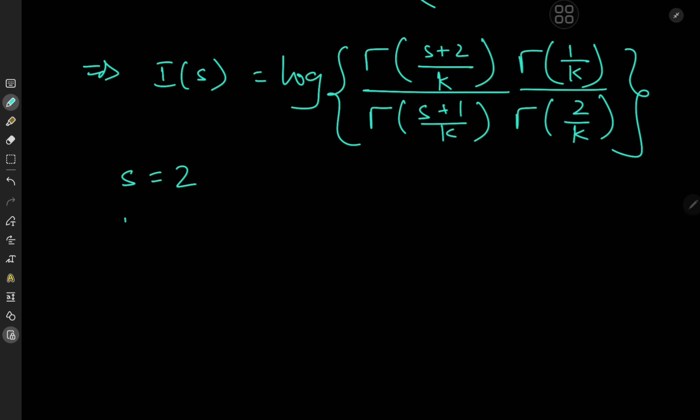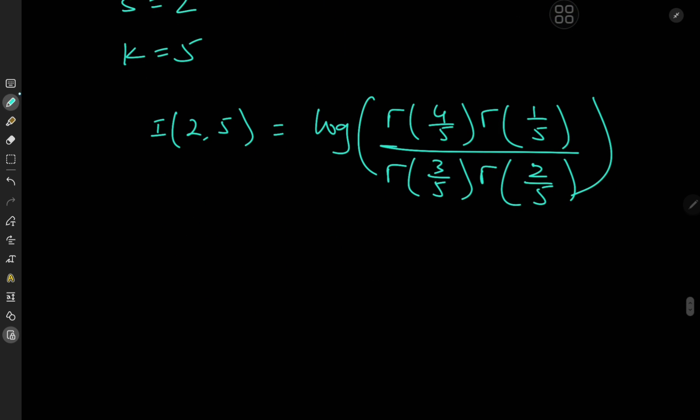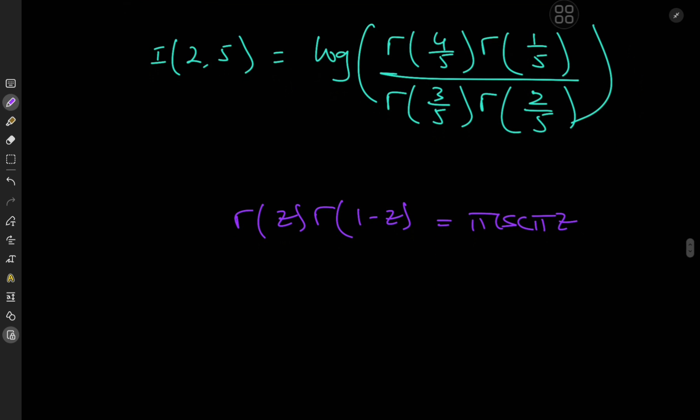One very cool result I figured was for the case of s being 2 and k being 5. Let me rephrase this as I being a function of both s and k. Then the case of I at 2 and 5 is the logarithm of gamma 4 by 5 times gamma 1 by 5 divided by gamma 3 by 5 times gamma 2 by 5. Now we can apply the reflection formula to all of these cases. We know that gamma z times gamma 1 minus z equals pi times the cosecant of pi times z.